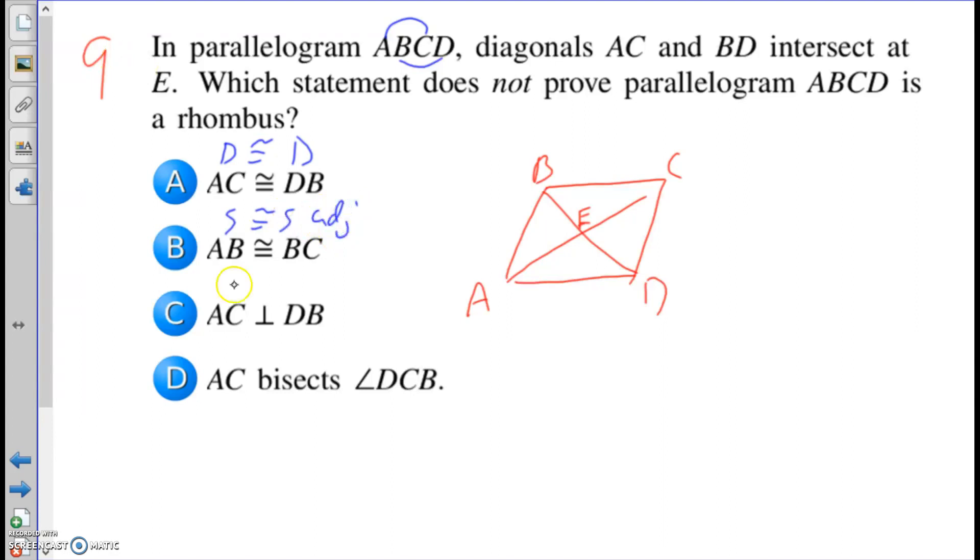AC perpendicular to BD, that's referring to the diagonals perpendicular. And AC bisects angle DCB, that's a diagonal angle bisector.